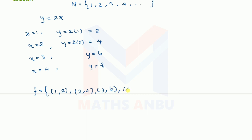When x equals 4, the y value is 8. When x equals 5, the y value is 10. So here we have even numbers as the output values. In the output values we have to look at the image values.